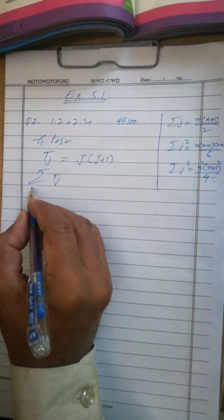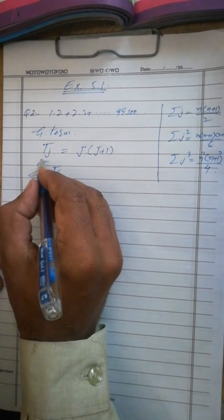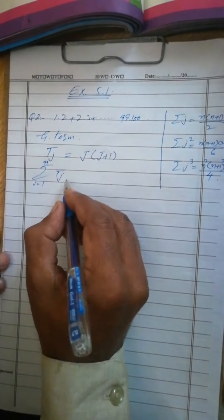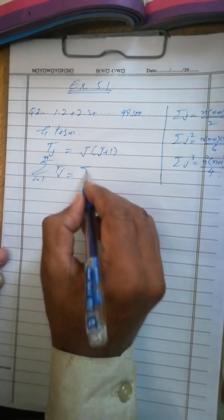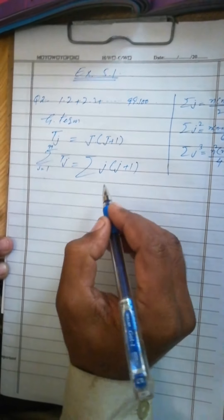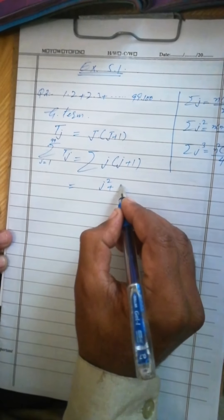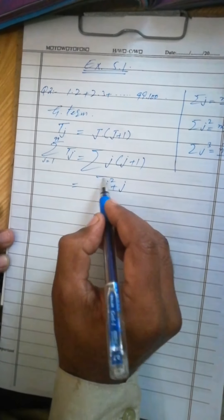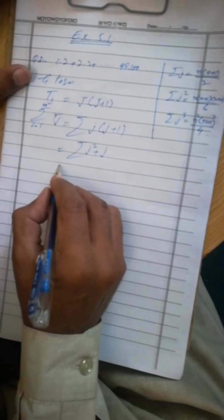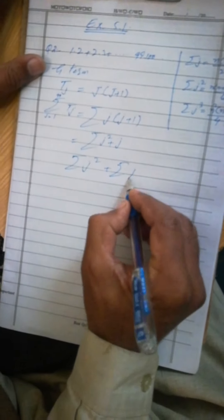Now sum from where j starts, from 1 to 99. This is equal to j² plus j.